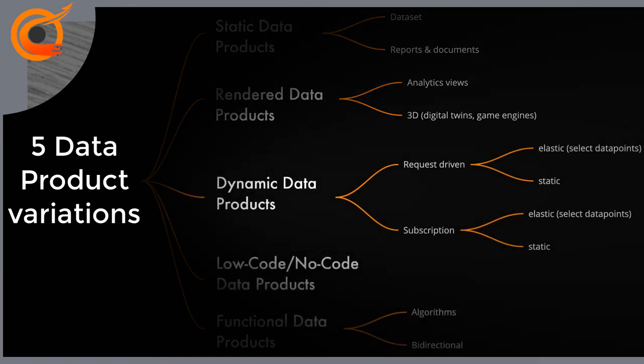Dynamic data products are data streams-driven and APIs-driven, and can be divided into two subcategories. The first is request-driven data products, which expect the data product consumer to be active and request content by invoking API calls. The second type is a subscription, in which the data product consumer subscribes and is then offered changed information automatically without invoking API calls. Either one can have predefined or elastic content. In predefined data products, the owner has locked the content, while in elastic data products, consumers can select a subset of the content.